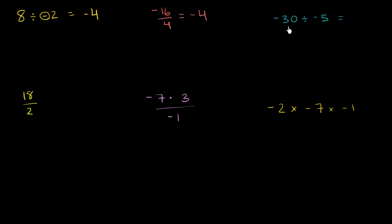Now I have negative 30 divided by negative 5. If I just had 30 divided by 5, that would be positive 6. And because I have a negative divided by a negative, the negatives cancel out, and so my answer will still be positive 6. A negative divided by a negative, just like a negative times a negative, gives you a positive answer.